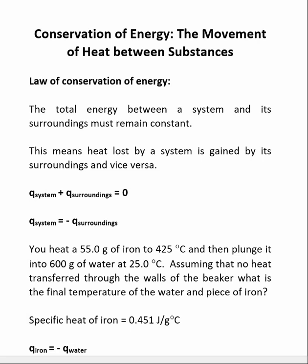So when a reaction gives off heat, that heat needs to go somewhere. And this idea starts from what's called the Law of Conservation of Energy. That says that the total energy between a system and its surroundings must remain constant. So that says we can't really gain or lose heat. If something gives off heat, something else must absorb it. And if something's absorbing heat, something else must be giving off heat.